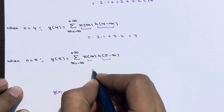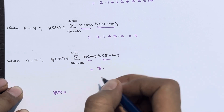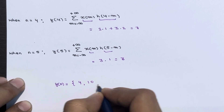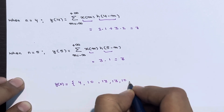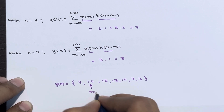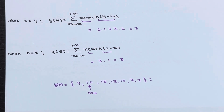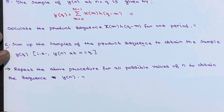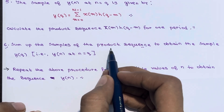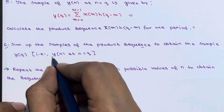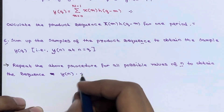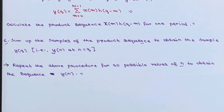The final result is y[n] = {4, 10, 13, 13, 10, 7, 3}, starting at n=-1 where the value 10 is at n=0. This completes the linear convolution using the tabular method — we calculated the product sequence for each period and summed samples to get each y[q], then repeated for all values of n.